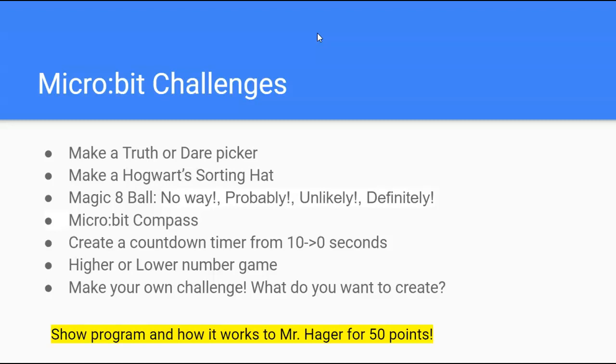Pick one of these things. Or if you finish one, you can pick another one. So you have the choice of making a truth or dare picker. You know that little game where you get truth or dare? You can program your microbit to tell you whether it's truth or dare. You could make a Hogwarts sorting hat that sorts you into one of the four houses. The magic eight ball game where you shake it and it tells you no way, probably, unlikely, or definitely.